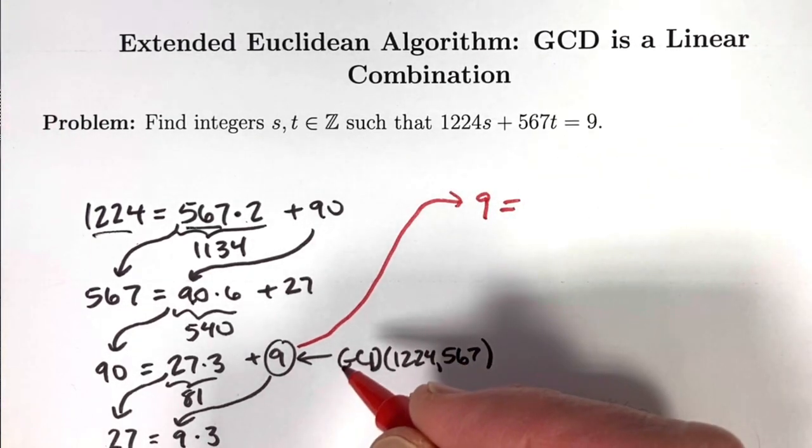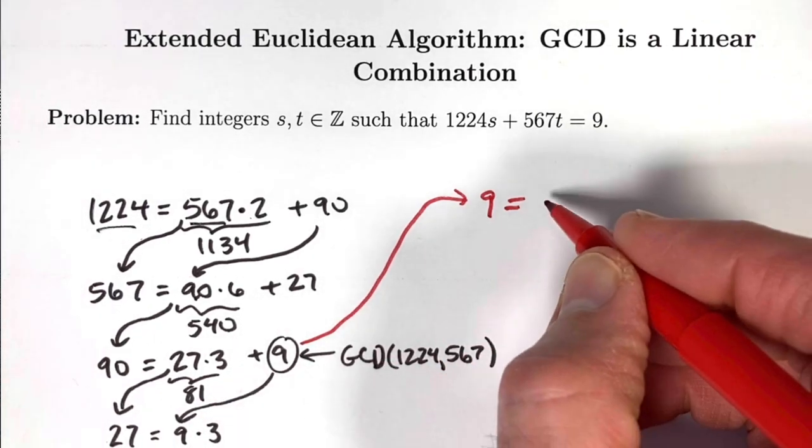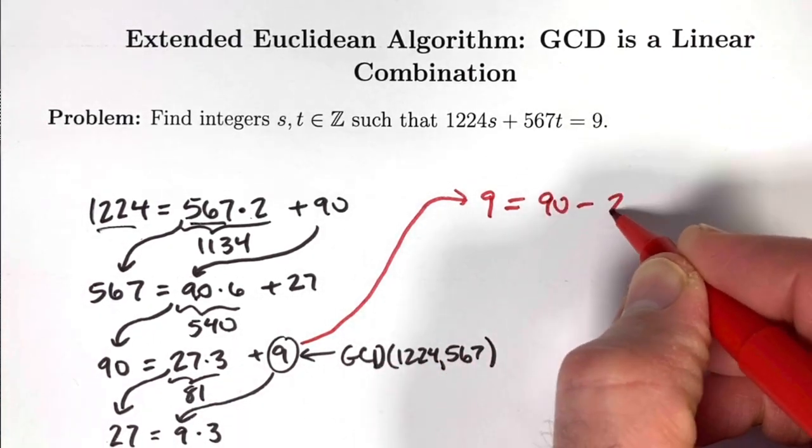So start by taking this equation and solving it for 9. Subtract 27 times 3 from both sides to get 9 is 90 minus 27 times 3.